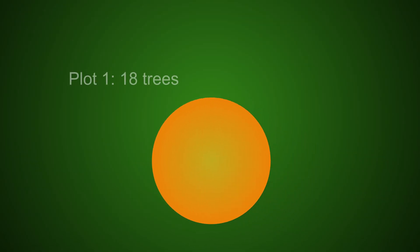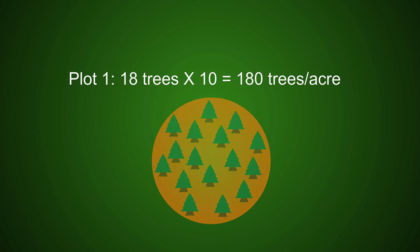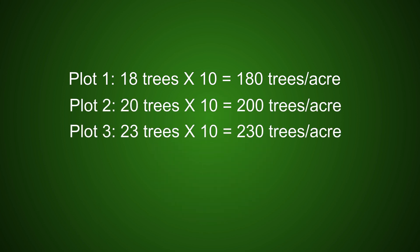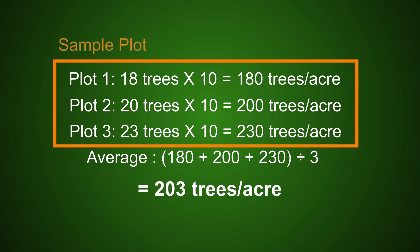Next, count all the trees within the sample plot you have flagged. Multiply the number of trees within the sample plot by 10. Do this at a minimum of three random points and take the average. The rule of thumb is that you will want at least one sample plot for every 10 acres. This tells you on average how many trees you have per acre.